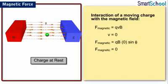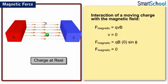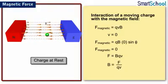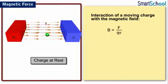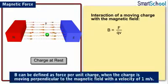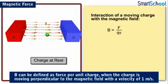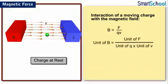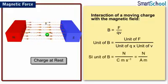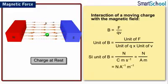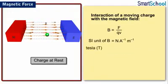When the charge in the magnetic field experiences maximum force, the force is expressed as F_magnetic = BQV, which can be written as B = F / QV. The magnetic field strength B can be defined as force per unit charge when the charge is moving perpendicular to the magnetic field with a velocity of 1 meter per second. The SI unit of magnetic field is Newton per ampere-meter, which is referred to as Tesla. Gauss is another common unit.